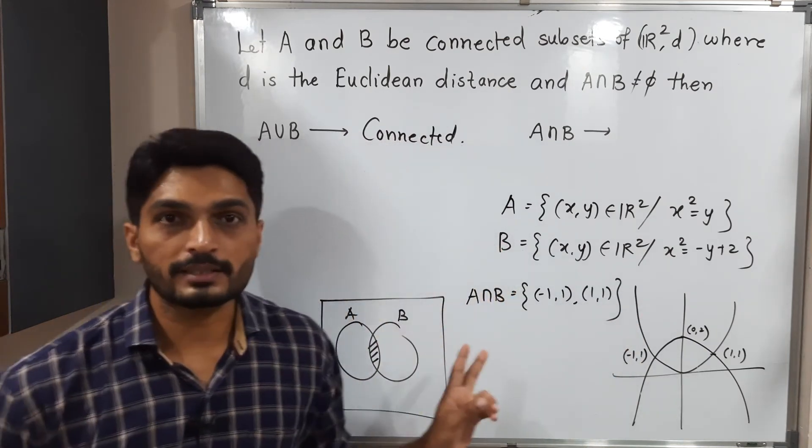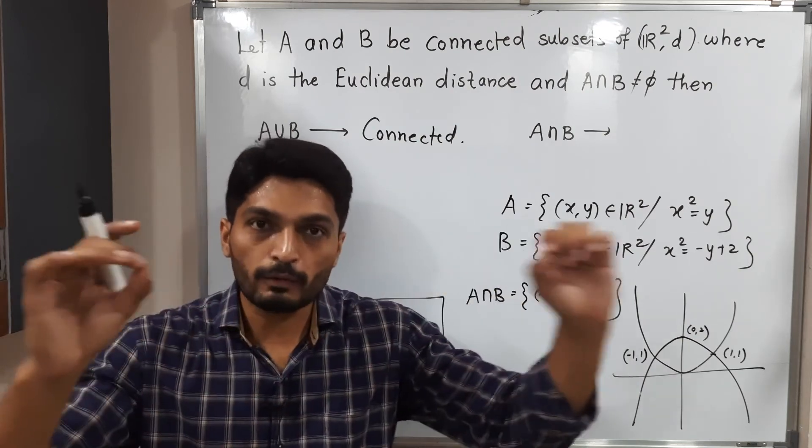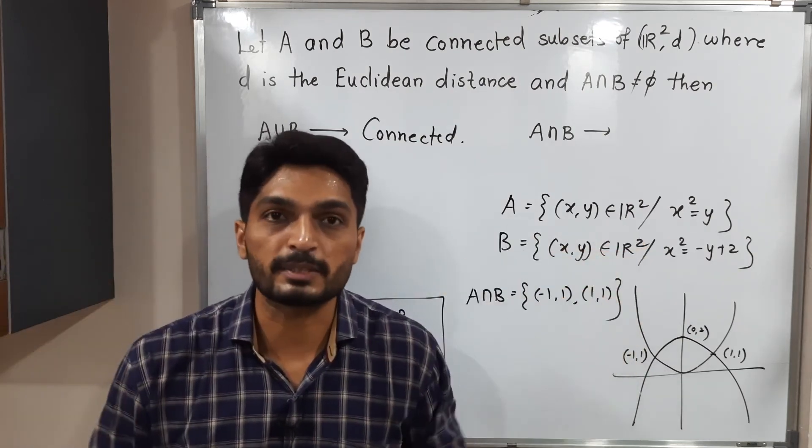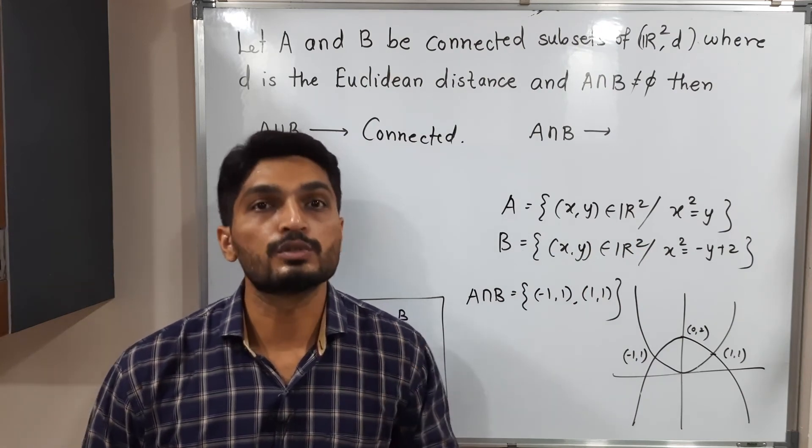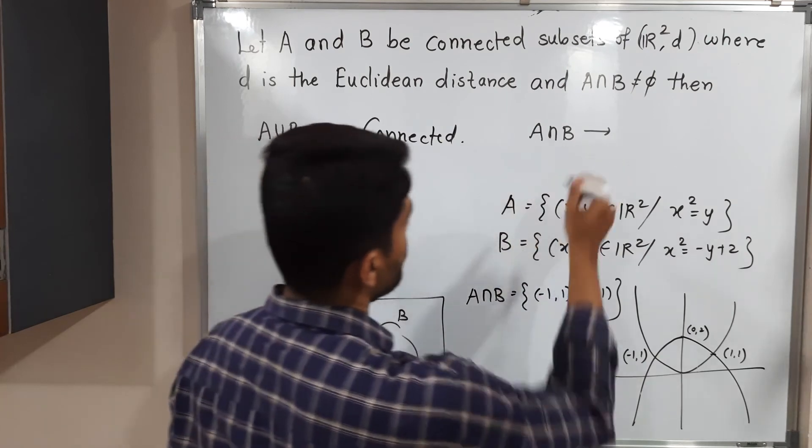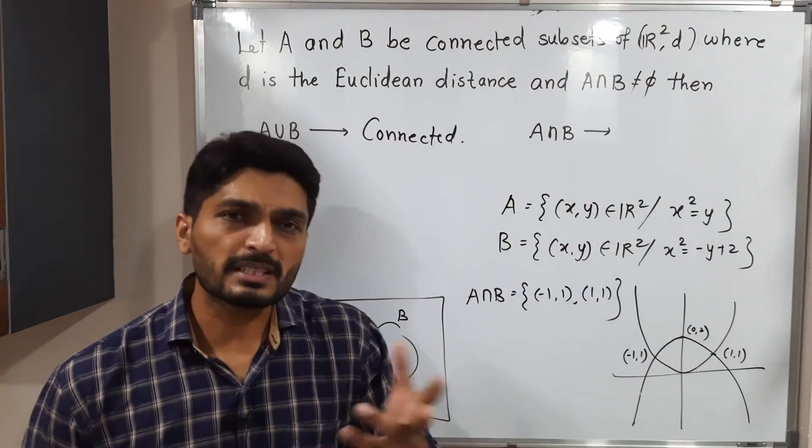These two sets are connected but their intersection is not connected, since we have two distinct points. So you can easily express them as a union of two disjoint non-empty closed sets. That's why we will say A intersection B is not connected in this example, but in some cases it can be connected.